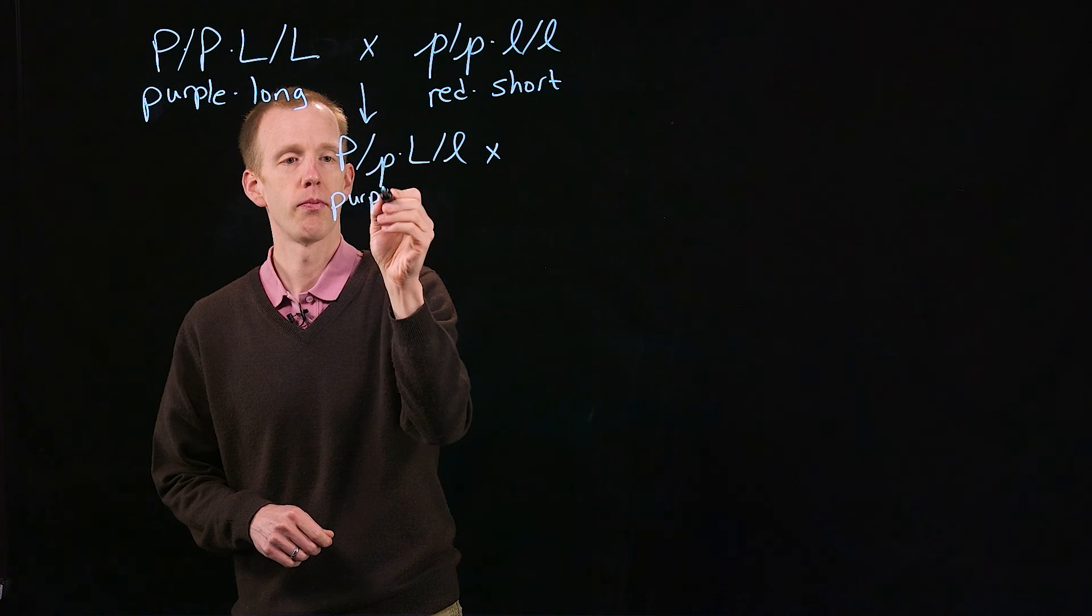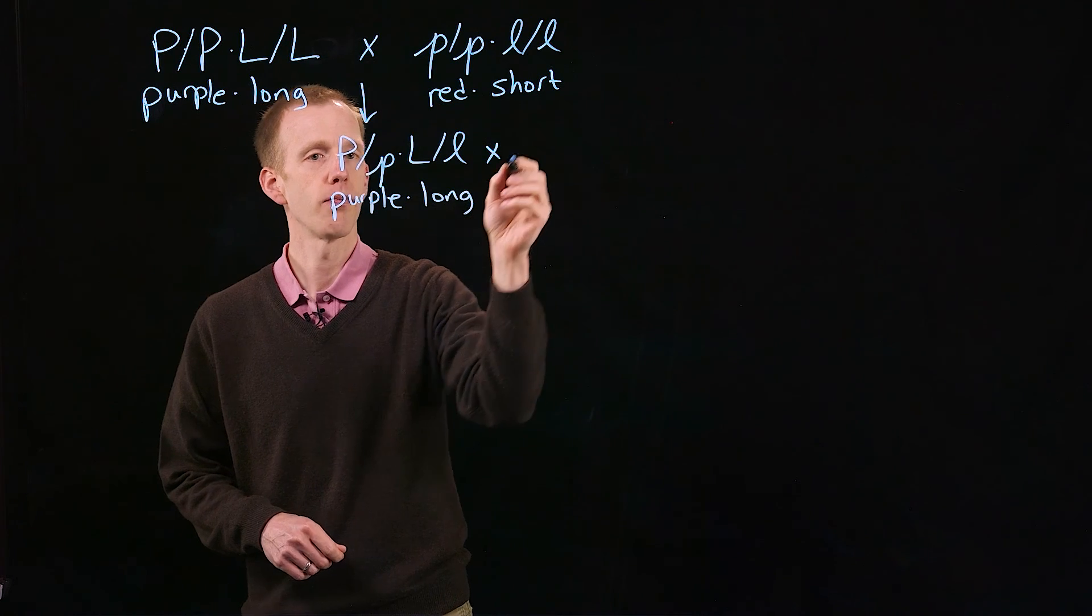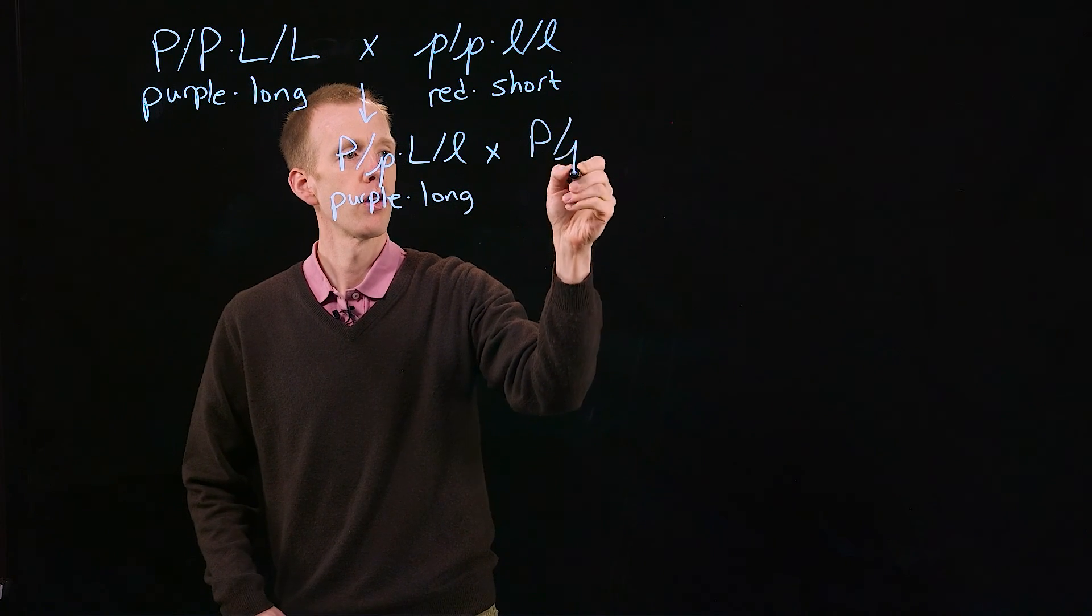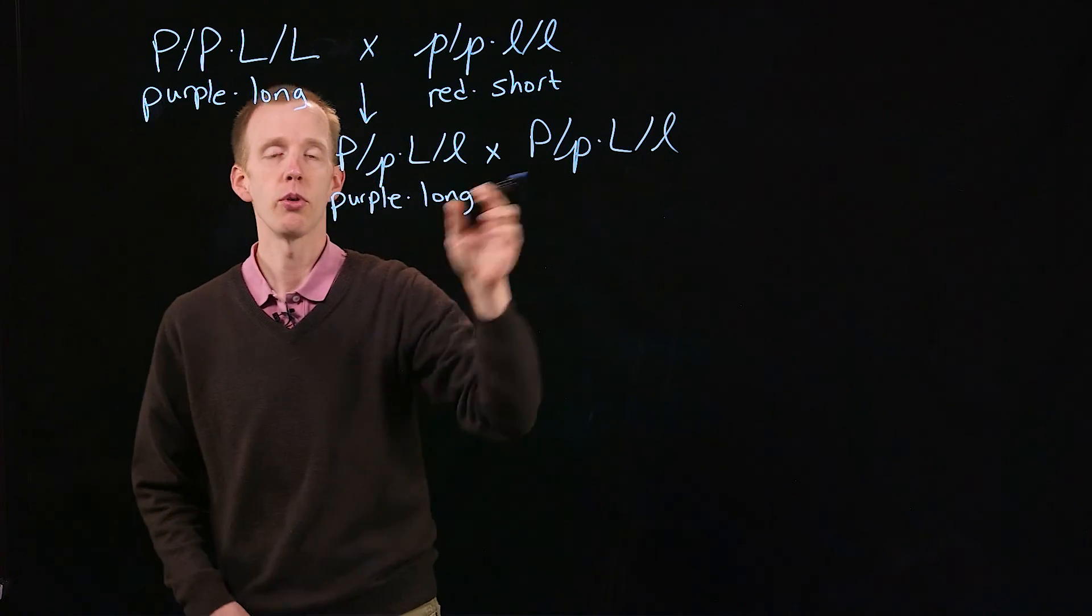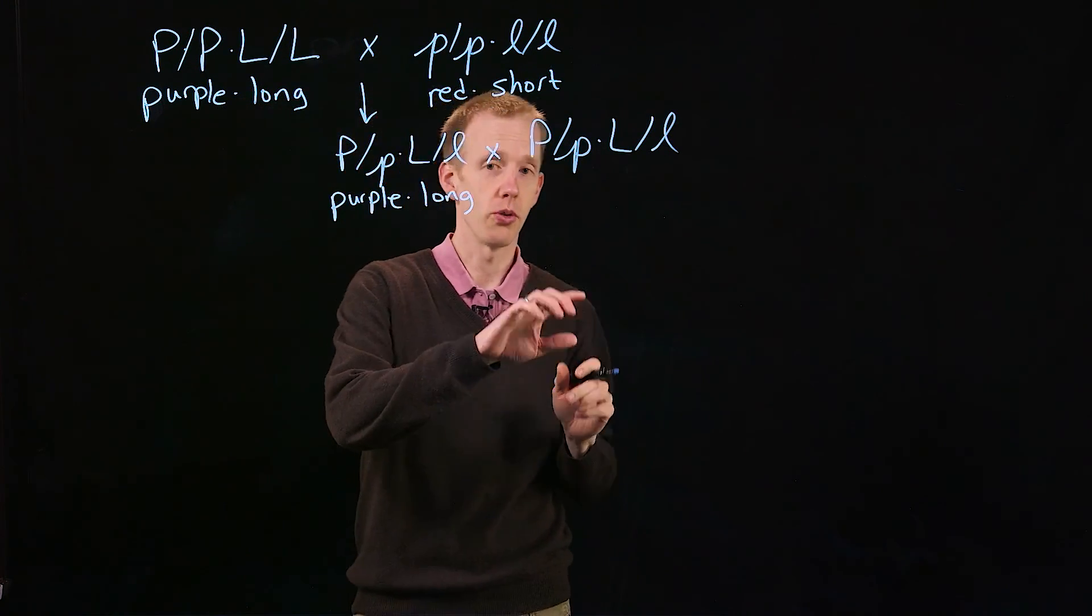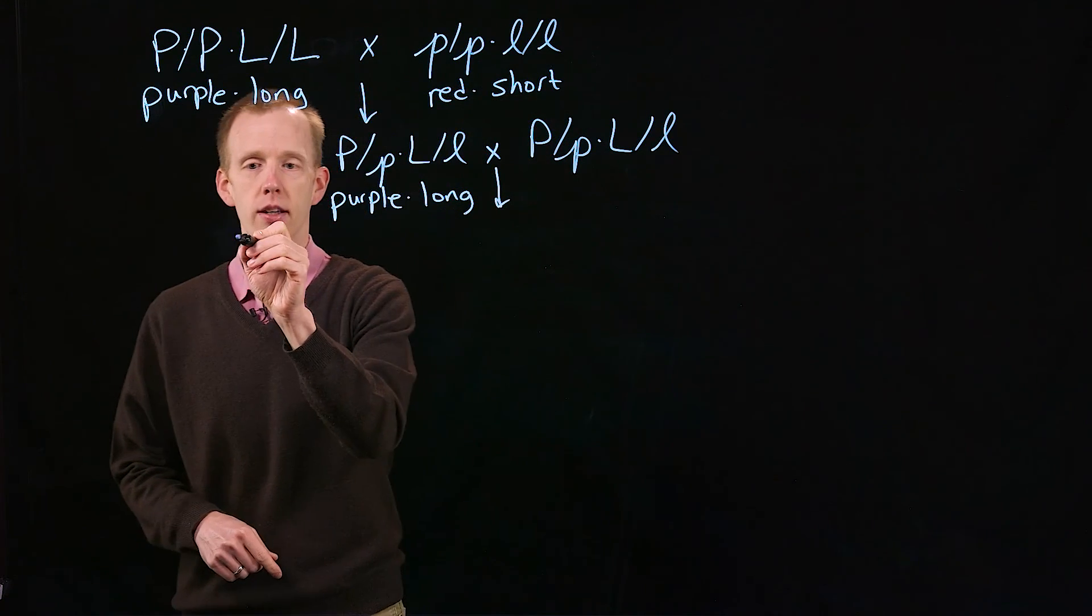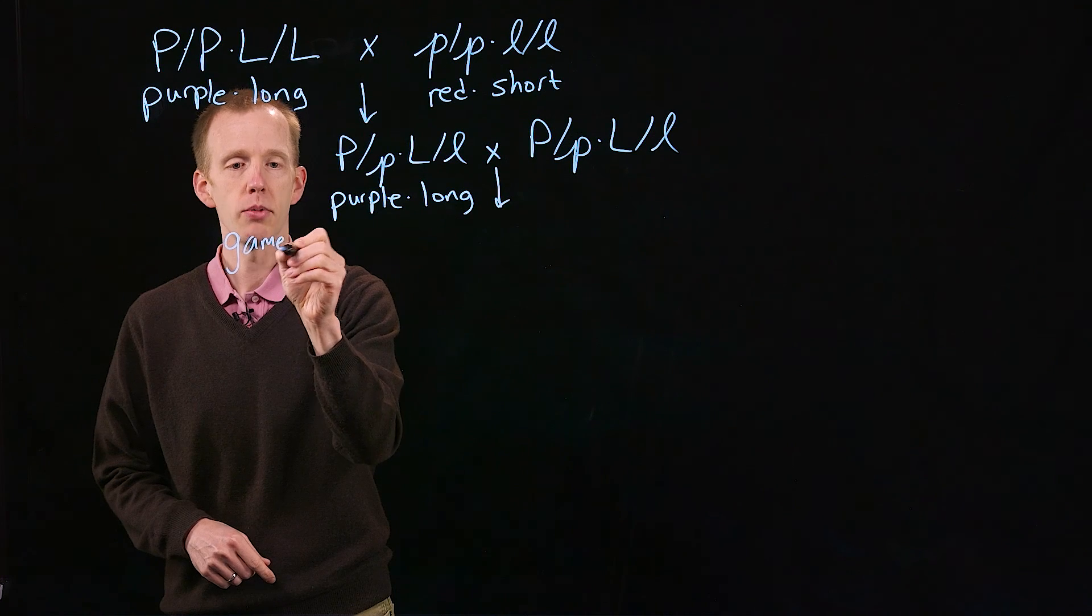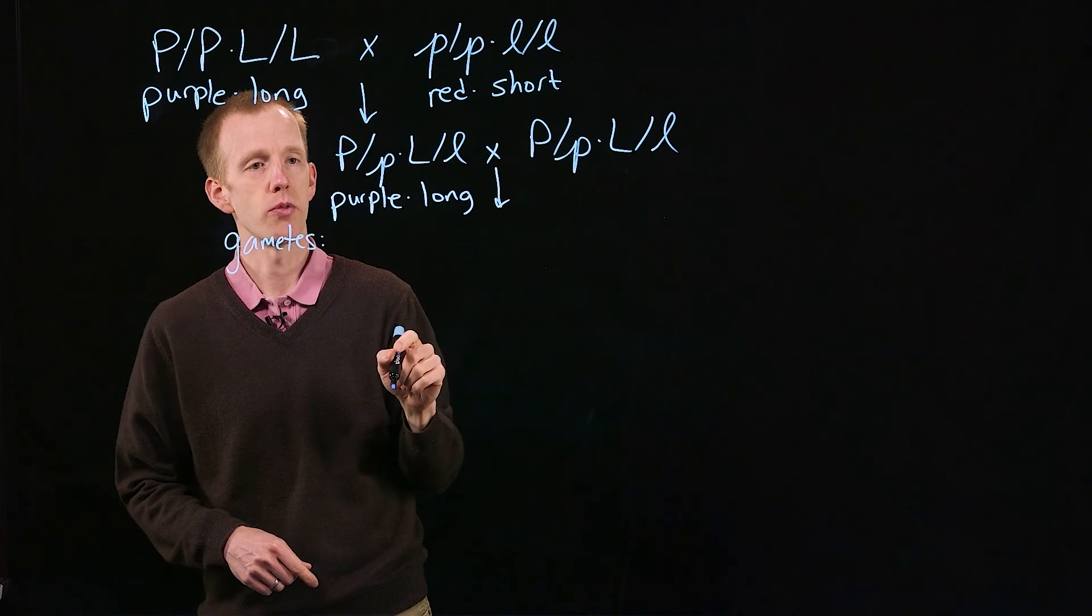This was a purple-flowered, long pollen-grained plant. If we perform a dihybrid cross, crossing two dihybrids—two heterozygotes at two loci together—we're going to generate gametes of particular types. There are going to be four gametes produced by each of these parents.